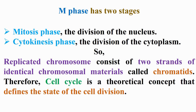Replicated chromosomes consist of two strands of identical chromosomal materials called chromatids. Therefore, the cell cycle is a theoretical concept that defines the state of cell division.